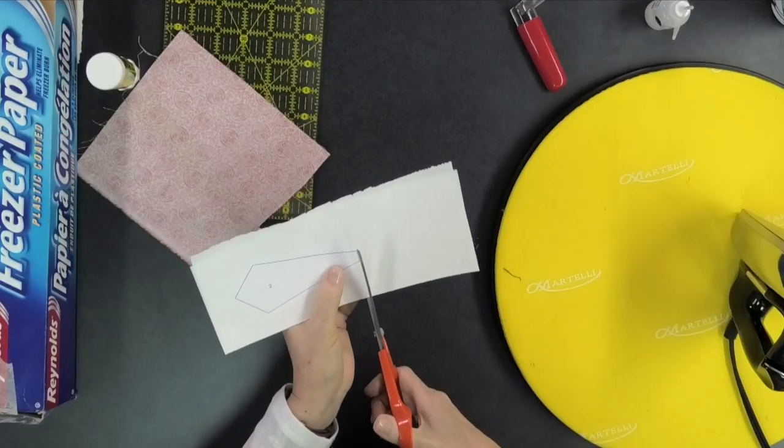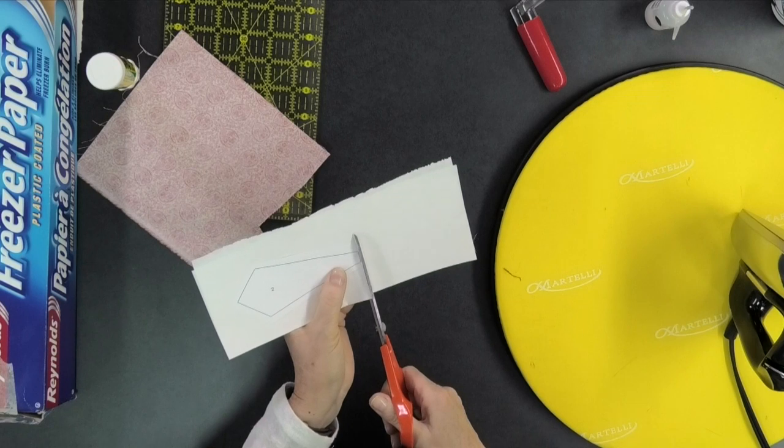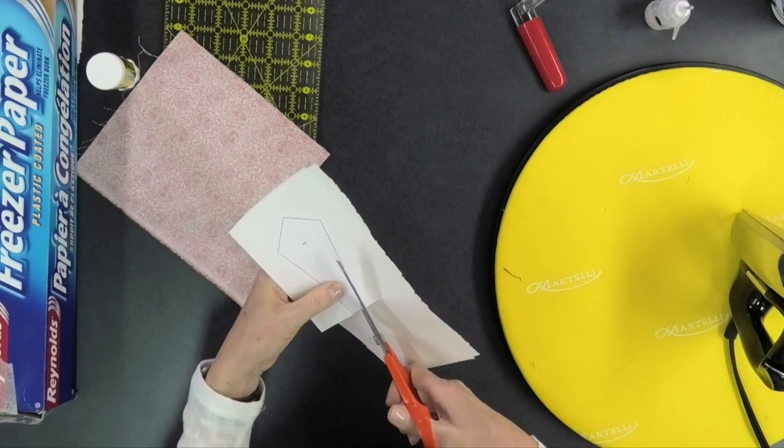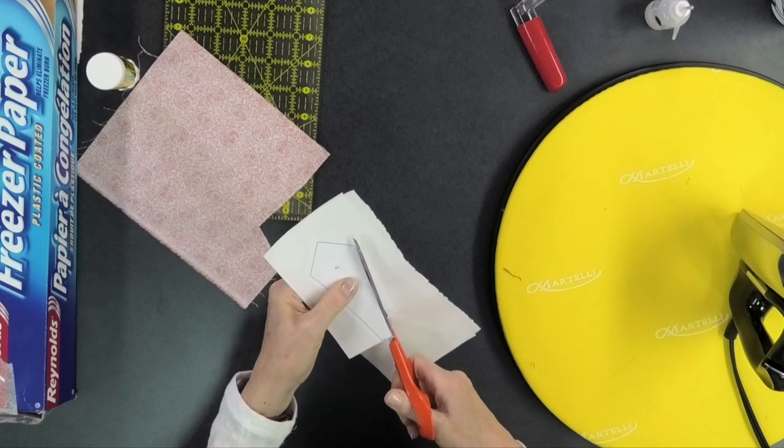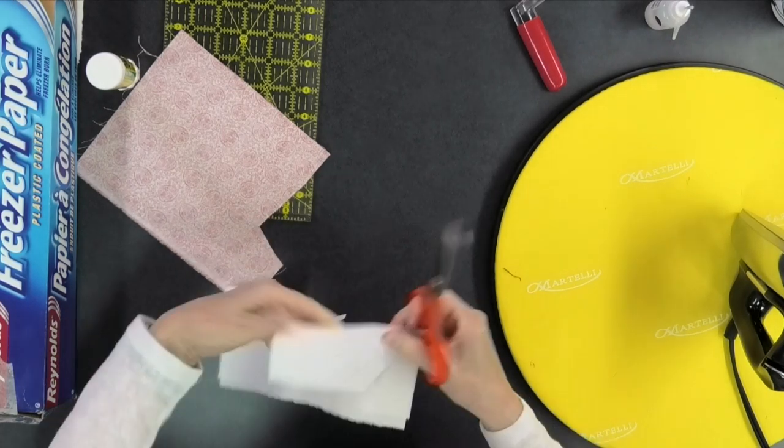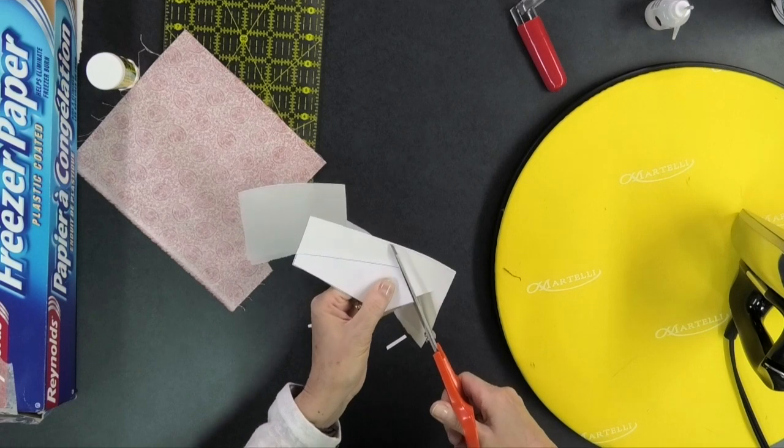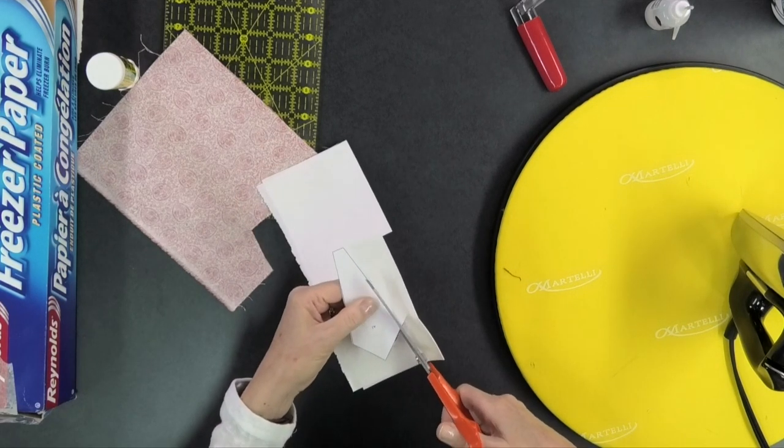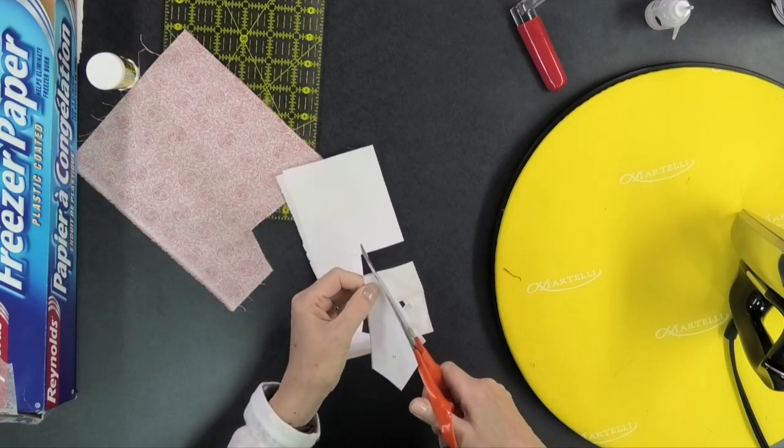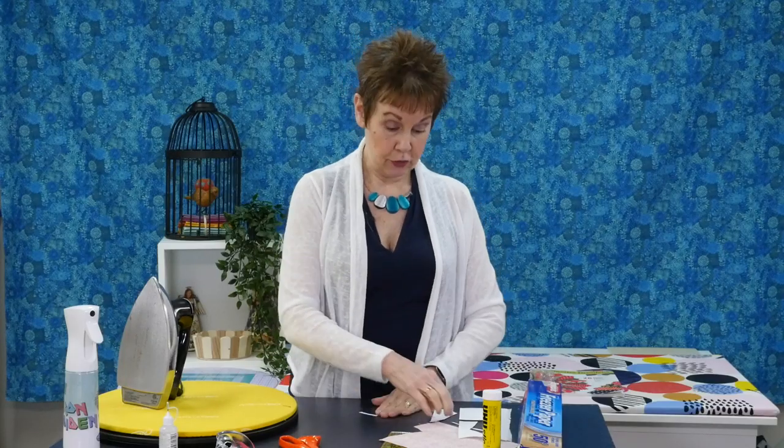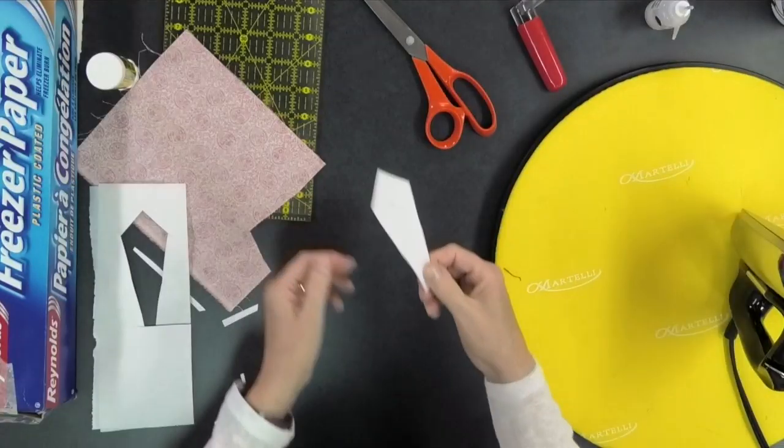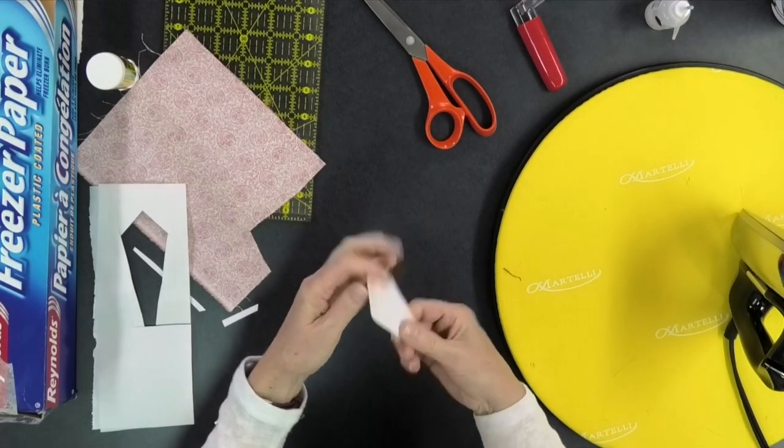Next thing to do is you want to cut out that template, right? And I'm going to cut it out just outside the lines just ever so slightly. I don't want to cut inside the lines. And this is going to make your reusable template. I now have my A3 template and it's pretty sturdy. It's going to last for a while.